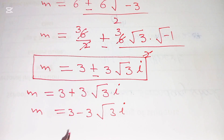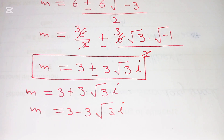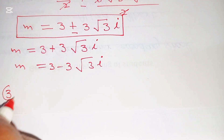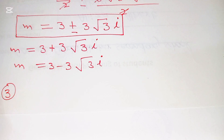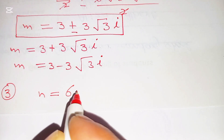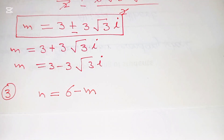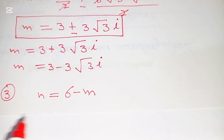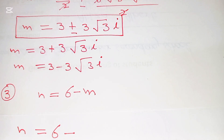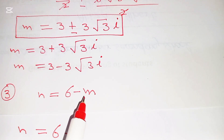Now we solve equation number 3: n equals 6 minus m. We substitute the values of m one at a time.